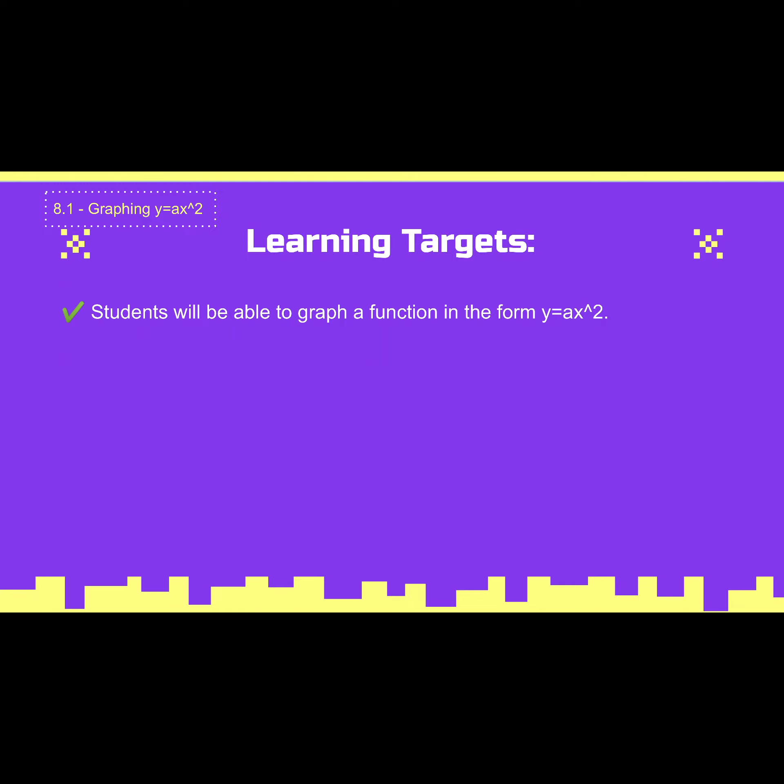Learning target: students will be able to graph a function in the form y equals ax squared. So that's the main thing we're going to look at — how can we graph something that is in this form, y equals ax squared.